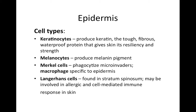In the epidermis: keratinocytes produce keratin, the tough fibrous waterproof protein that gives skin its resiliency and strength. Melanocytes produce melanin pigment which protects from UV. Merkel cells phagocytize micro-invaders — they are macrophages very specific to the epidermis. Langerhans cells are found in the stratum spinosum and may be involved in allergic and cell-mediated immune response in the skin.